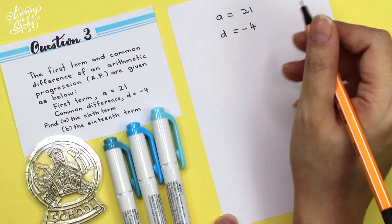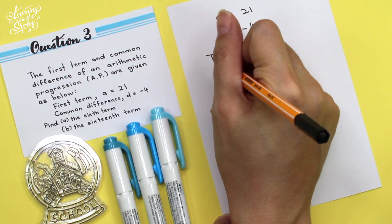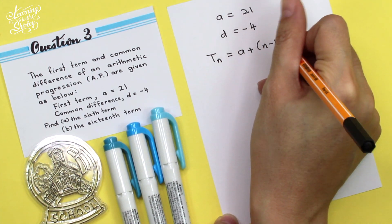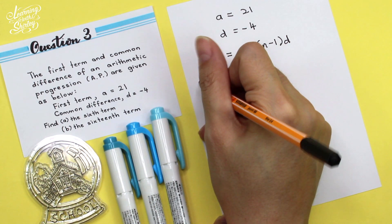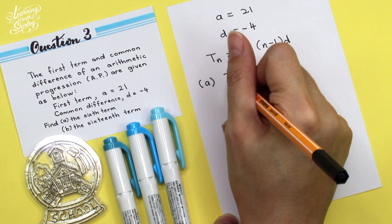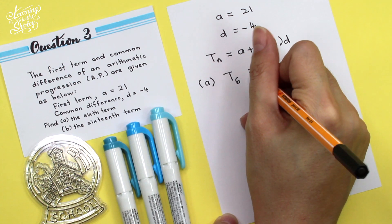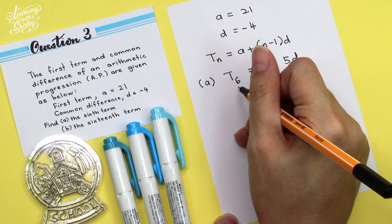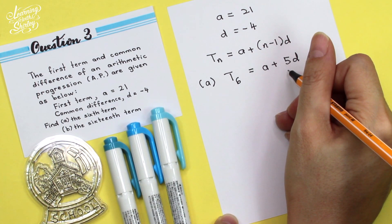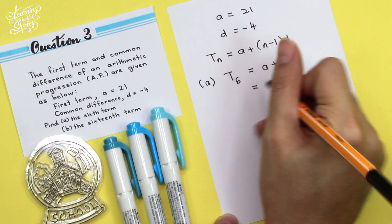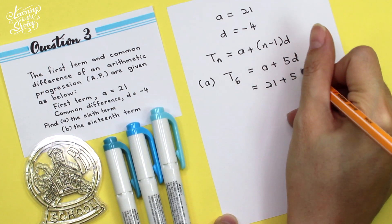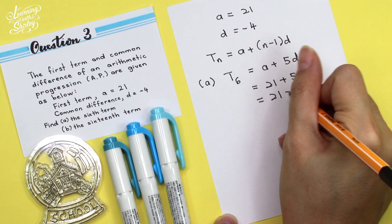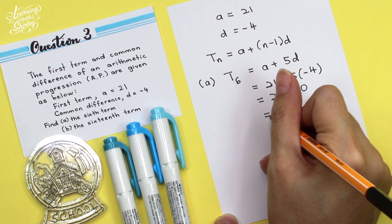To solve A and B, we have to use the formula of TN. So TN equals to A plus N minus 1, D. So to solve A, to find the sixth term, we put T6 equals to A plus 5, D. Because this is N, this will be N minus 1. So equals 21 plus 5 times negative 4, which is equal to 21 minus 20. And the answer is 1.